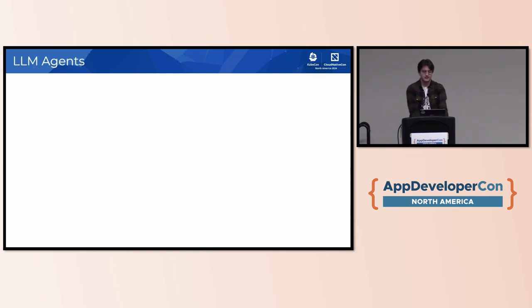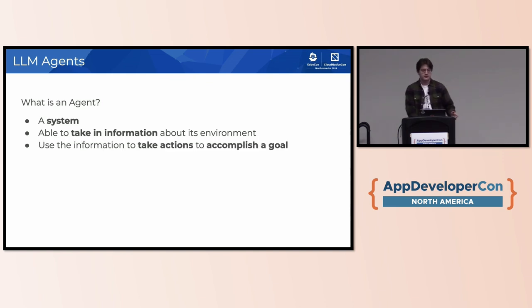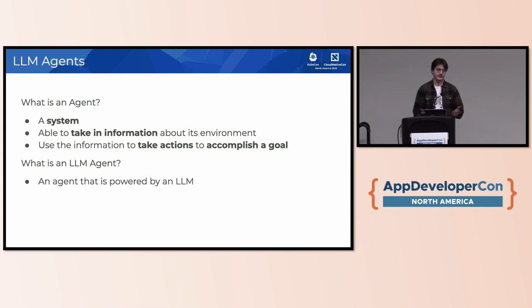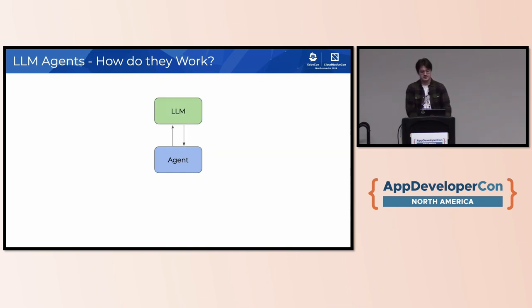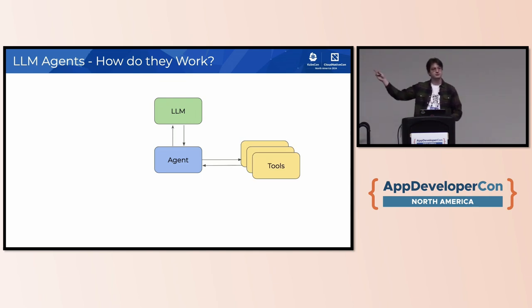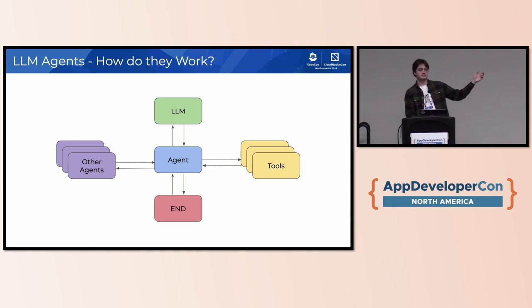This is where language model agents come in. The idea of an agent comes from AI research going back decades — it's a system able to take in information about its environment and take actions to accomplish a goal. LLM agents are just an agent where the decision-making is powered by a language model. We have an agent server — Python code that calls out to the language model — but also the ability to call out to tools that take actions for us, and sometimes to other agents in multi-agent systems. Eventually the agent decides it's done and stops.